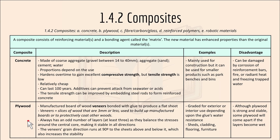Plywood is a manufactured board of wood veneers bonded together with glue to produce a flat sheet. Veneers are slices of wood three millimetres or less, used to build up manufactured boards or to protectively coat other woods. Plywood always has an odd number of layers — at least three — which balances the stresses around the central core, making it stable in all directions. Importantly, each veneer's grain direction runs at 90 degrees to the sheets above and below it, increasing stability.